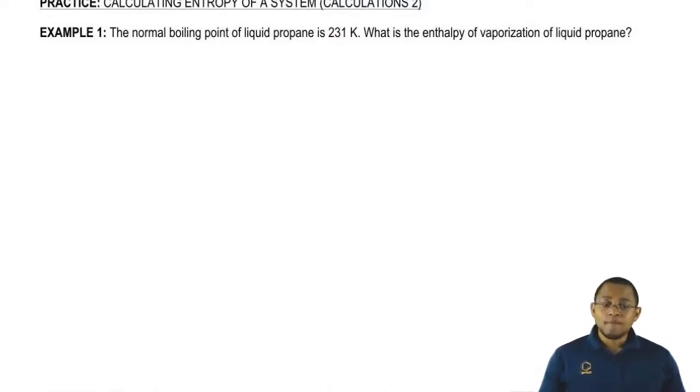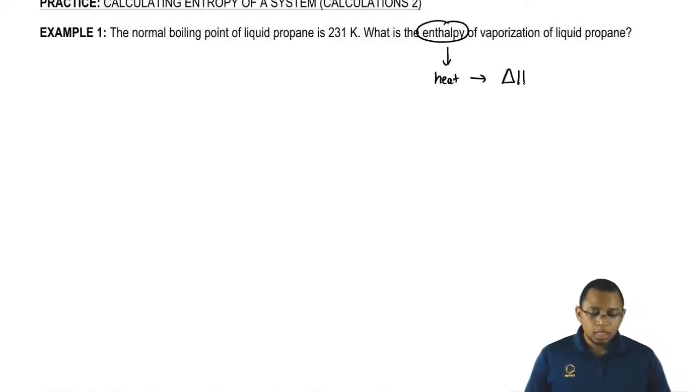First of all, remember, they don't have to tell you explicitly enthalpy of vaporization. Instead of saying enthalpy, they could have said heat of vaporization. In either case, it just means delta H. All they're telling me here is the normal boiling point of liquid propane and from that I'm supposed to figure out what my delta H is.